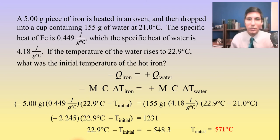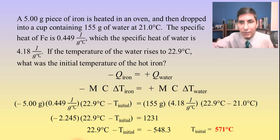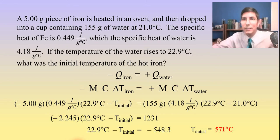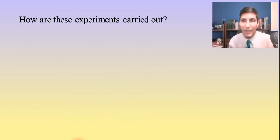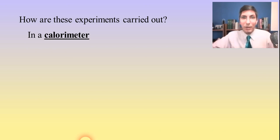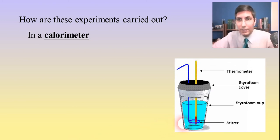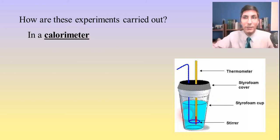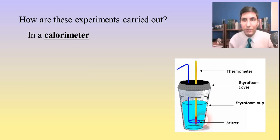Q equals MC delta T — these are physical processes with no chemical reactions. In the next video we'll learn how to take Q and turn it into an actual delta H value for a chemical reaction. But before we stop here, how are these experiments carried out? We use something called a calorimeter — an actual physical device in which we carry out these experiments. It looks basically like a cup, and usually the easiest and cheapest thing to make it from is polystyrene — styrofoam — and you can even take two styrofoam cups and put one in the other.